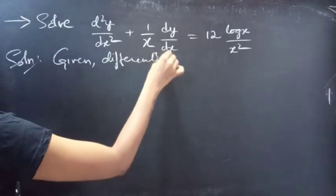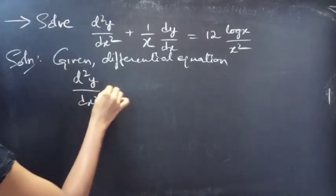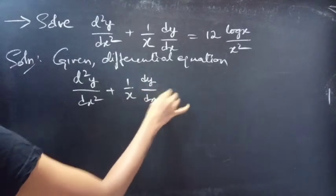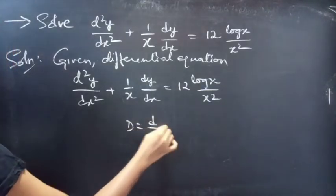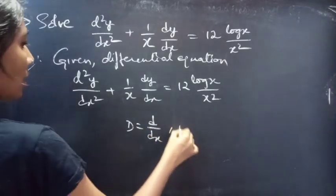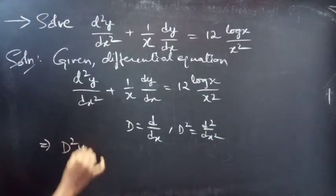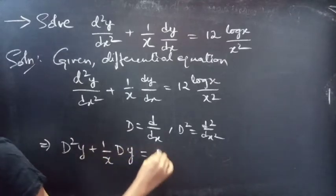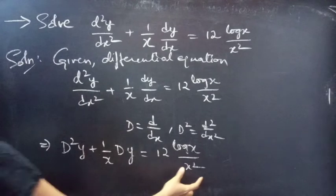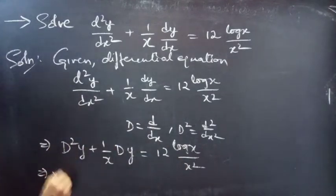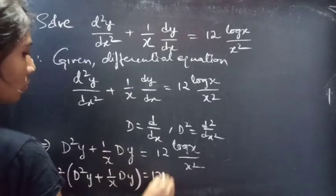Given the differential equation d²y/dx² + (1/x)·dy/dx = 12·log(x)/x², where d is the differential operator with independent variable x and d² is d²/dx². We can write the equation as d²y + (1/x)·dy = 12·log(x)/x². Taking x² to the LHS, we get x²·d²y + (1/x)·x²·dy = 12·log(x).